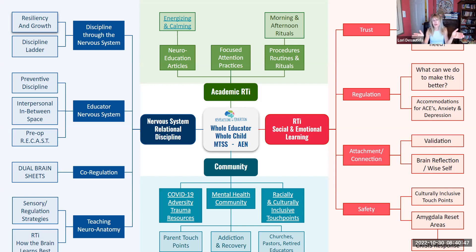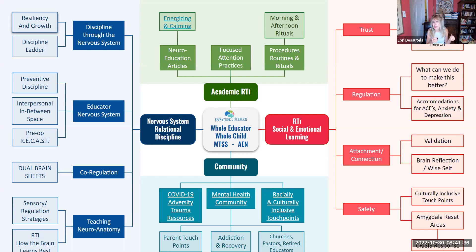In the traditional MTSS, we have four areas: academic response to intervention and instruction, social and emotional response to instruction — which I also think of as the neuroeducation of the nervous system — community resources and supports, and discipline through a distinct lens we're calling nervous system relational discipline. This template is dynamic and will never be completed; we'll continually add and augment resources. When you link to these sections, you will be sent to resources.